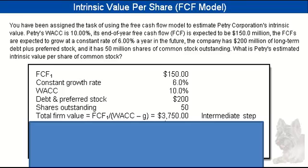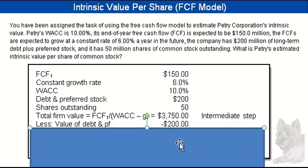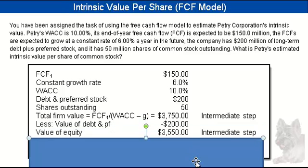When we take 150 and divide it by 10% less 6%, we get $3,750 million — so that's $3,750,000. Remember, these are in millions. Then we need to subtract out the value of debt and preferred stock, which is $200 million. That tells us the value of the equity is equal to $3,550 million, or $3.55 billion.